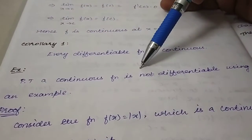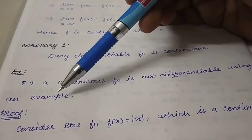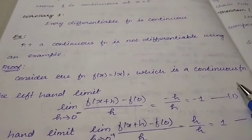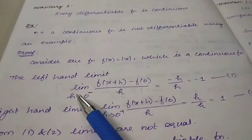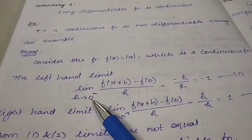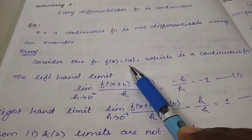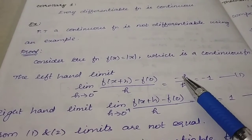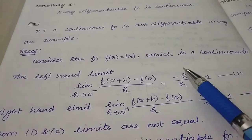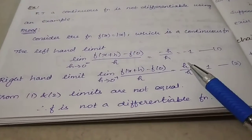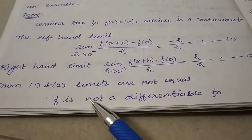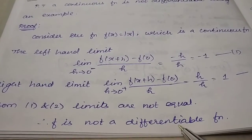To prove that a continuous function need not be differentiable, consider f(x) = |x|, which is a continuous function. The left-hand limit gives: limit as h→0⁻ of [f(0+h) − f(0)] / h = −h/h = −1. The right-hand limit gives +1. Since −1 ≠ 1, the two limits are not equal, so f(x) = |x| is not differentiable. Thank you students.